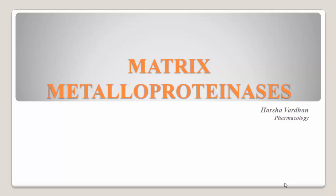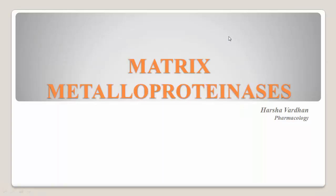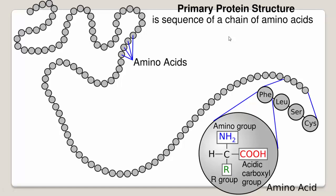Endopeptidases act on other enzymes in the middle of the protein structure. Think about a primary protein structure — a peptide chain with polypeptide linkages between each of the amino acids. Exopeptidases actually break or cleave the amino acid sequence at the terminal end of the protein structure. Whereas endopeptidases may cleave anywhere in the middle. So these are called endopeptidases.